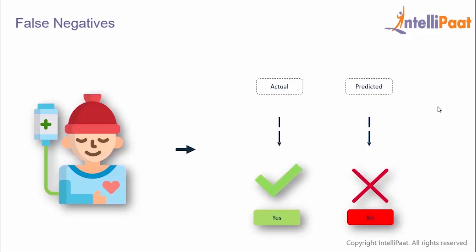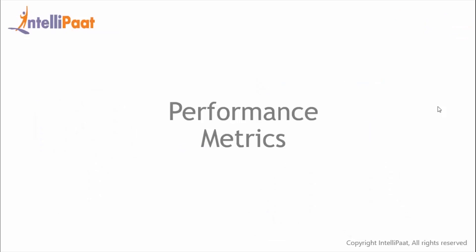Finally we have false negatives. These are the cases in which the actual value is true but the predicted value is false — the model predicted that the patient does not have cancer but in reality they do. Consider the real-life implications: a patient who has cancer has been incorrectly diagnosed as not having cancer. This is really dangerous, which is why we need to reduce the quantity of false negatives.